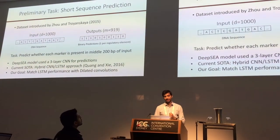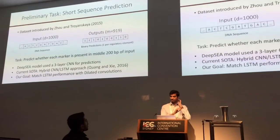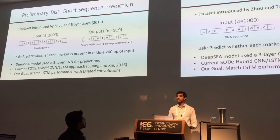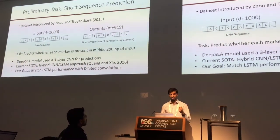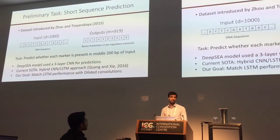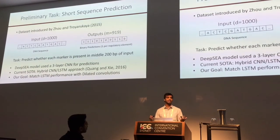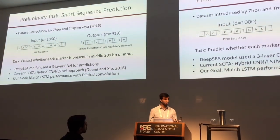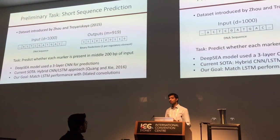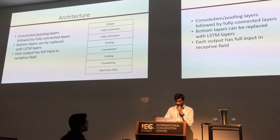The preliminary task is short sequence prediction — the exact task the DeepSEA authors did. The input is a sequence of length 1,000 and the output is a set of 919 binary predictions consisting of a variety of transcription factors, histone modifications, and DNase sites. The task is to predict whether each marker is present in the subset of the input. There's the three-layer CNN from Zoe and Trojansky, and the hybrid CNN-LSTM model from Quang and Xie. Our goal is to see if dilated convolutions can match the LSTM performance or at least beat the CNN. Since these sequences are short, we don't expect a huge benefit, but we want a proof of concept before scaling up.